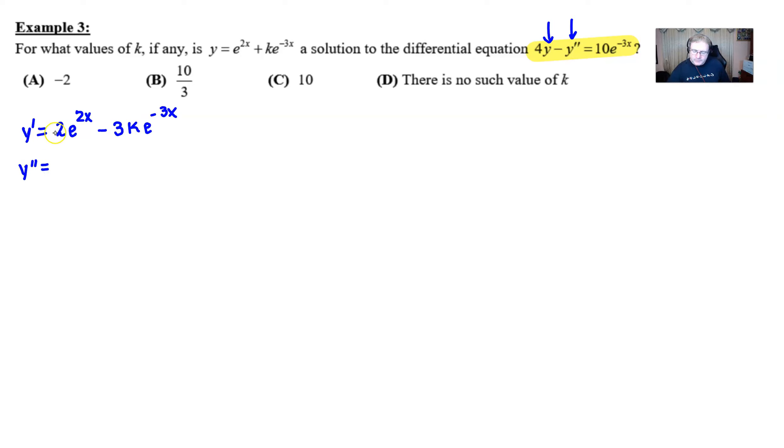So the derivative of 2e to the 2x would be 4e to the 2x. Hopefully you see that again by the chain rule. And now for the derivative of 3k e to the negative 3x, I believe the sign's about to change back to a plus. I think this 3 is going to be multiplied by another 3. The k drops in. And then, of course, we have e to the negative 3x.